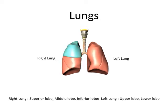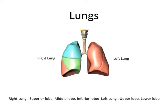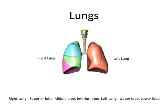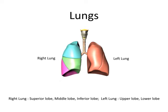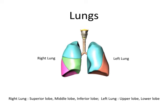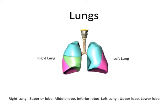Each lung is divided into lobes. The right lung has three lobes: the topmost is the superior lobe highlighted in blue, the middle lobe in green, and the inferior lobe in pink. The left lung has only two lobes, primarily because it needs more space to accommodate the heart. The upper lobe is highlighted in light blue and the lower lobe in pink.